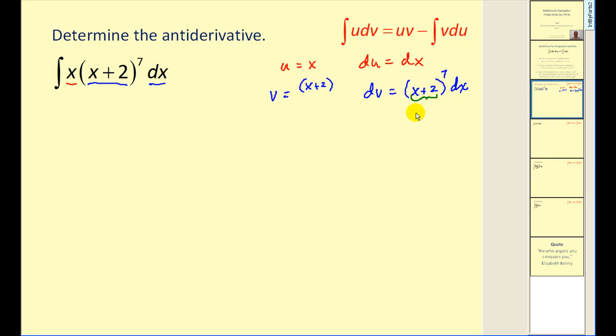Therefore, when we apply the power rule for integration, we'll add one to the exponent and then divide by that new exponent. Now let's apply our integration by parts formula and see if this integral is easier to integrate.